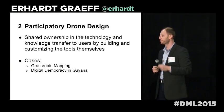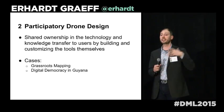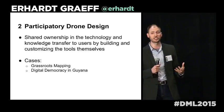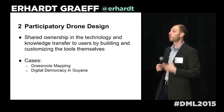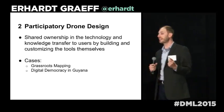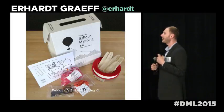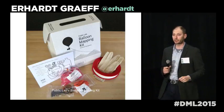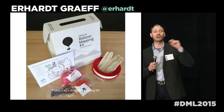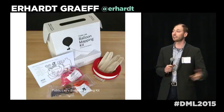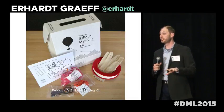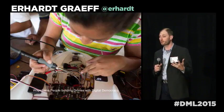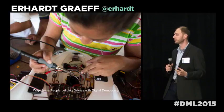The second way we can use participatory design is through knowledge transfer. The people are creating the drones themselves — they're learning how to build them, repair them, and they understand the technology in a way that allows them to have a sense of ownership over it. Public Lab, when doing grassroots mapping, now has a kit that people can use with local materials to customize it for their particular context, and they can repair it themselves using very simple materials.